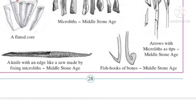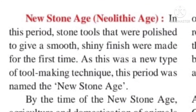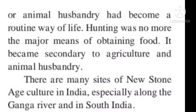The New Stone Age, or Neolithic age, is so named because it is in this period that the new technique of making polished stone tools with a smooth and shiny finish was introduced. They started making tools that were polished by scrubbing them against each other, resulting in a very smooth and shiny surface.